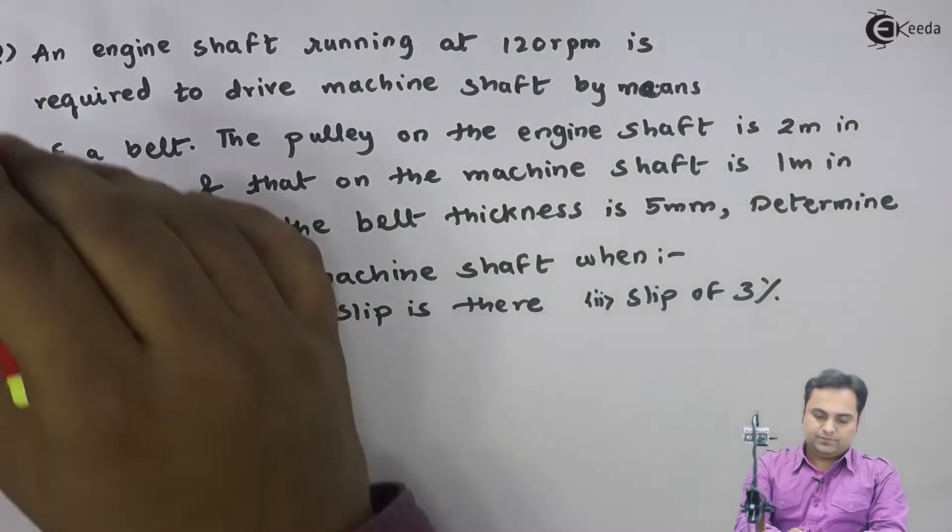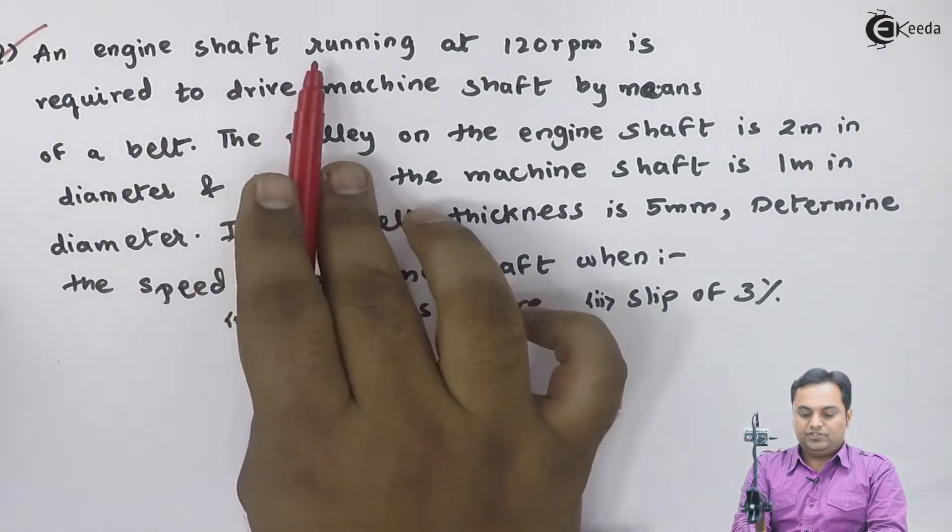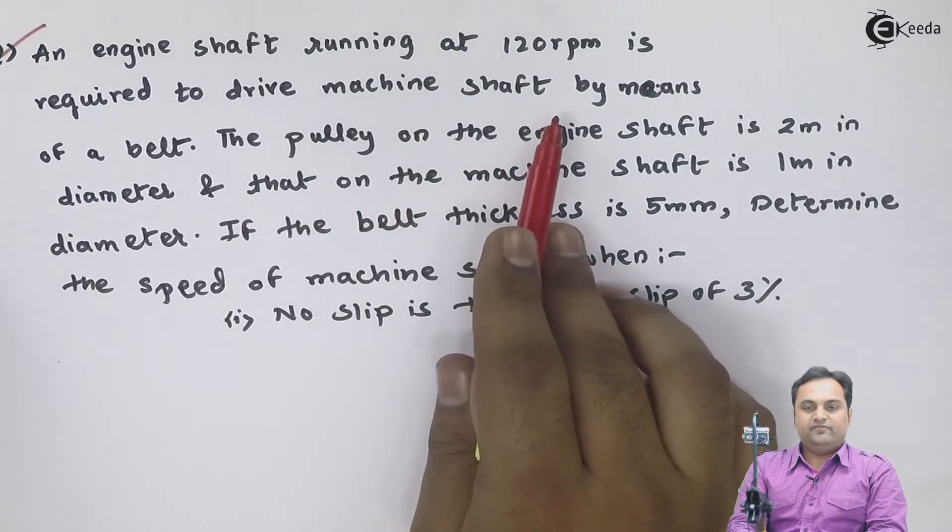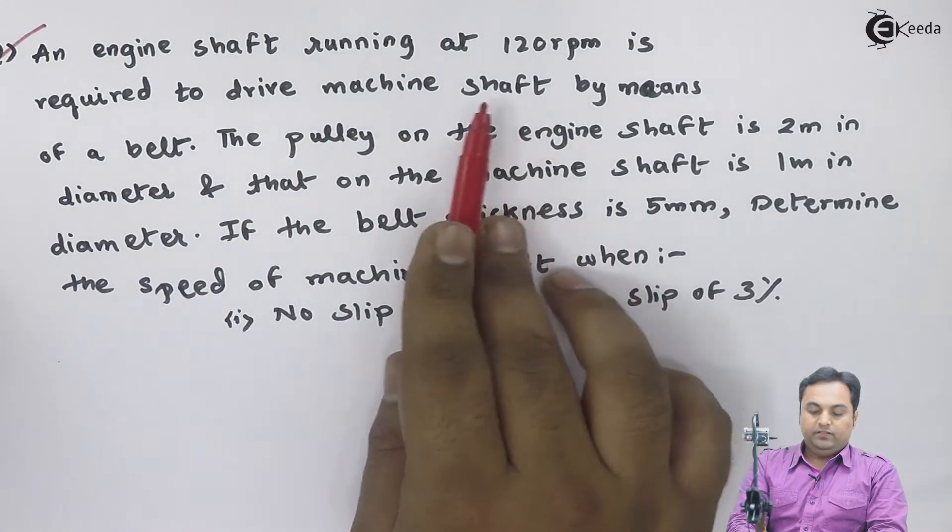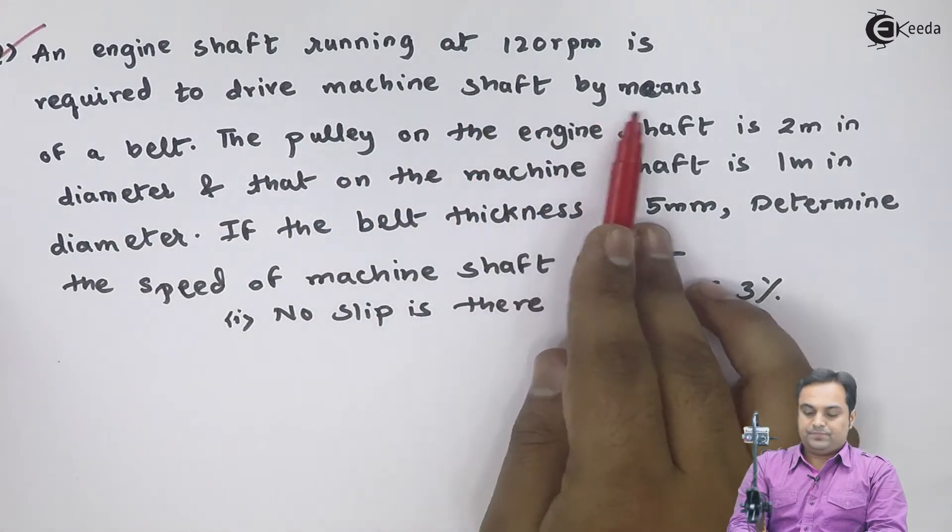Let us take the next question. It is given an engine shaft running at 120 rpm is required to drive machine shaft, so the engine shaft is a driver shaft, machine shaft is driven by means of a belt.